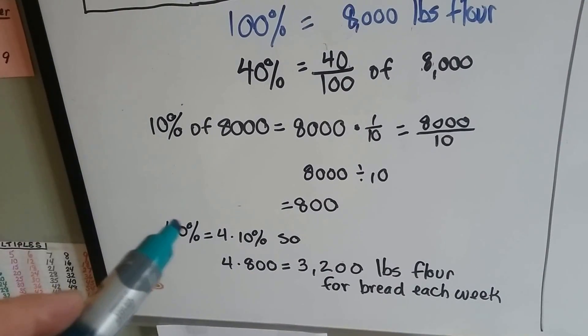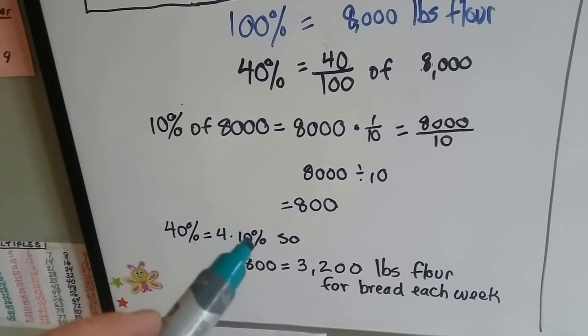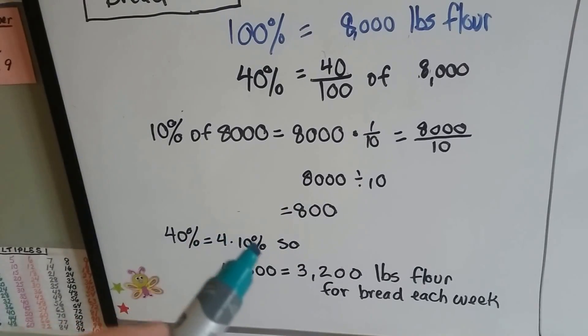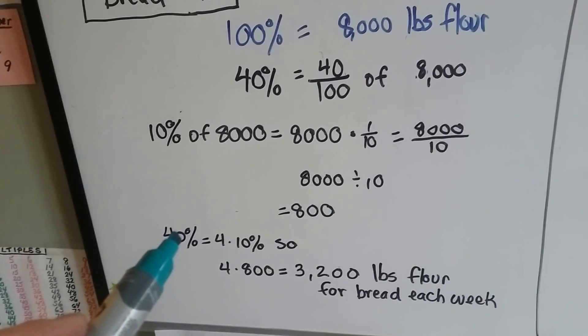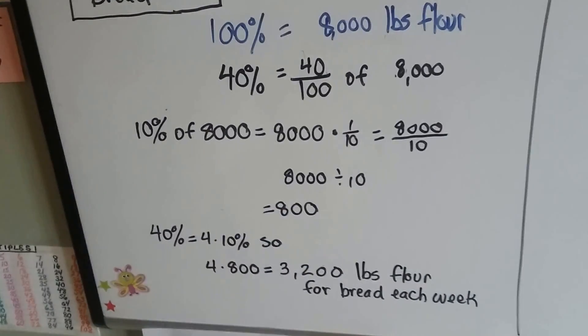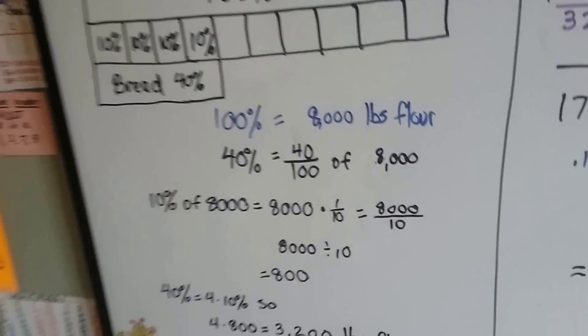We split the 40% into 4 to get 10%, so to multiply it back to 40%, we had to multiply it by 4. This was 10%, we multiply that by 4, and get 3,200. Proportional reasoning.